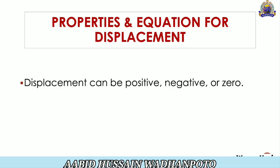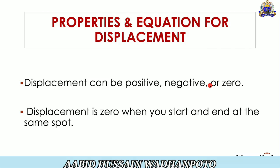Here are the properties of Displacement. Displacement can be Positive, Negative, or Zero — meaning if we measure the Displacement, it may be positive, it may be negative, or it may be zero, meaning no displacement at all. Displacement is Zero when you start and end at the same spot. If you are starting from a point and ending at the same point, your Displacement is Zero.